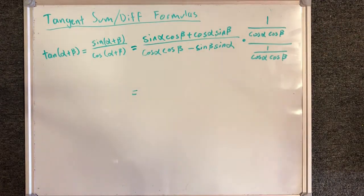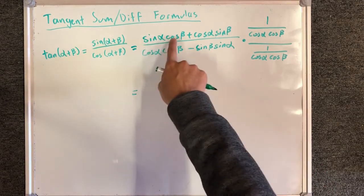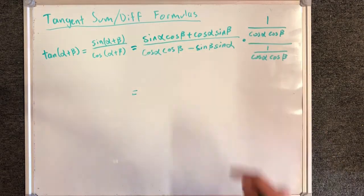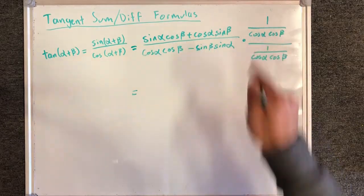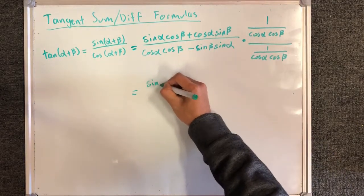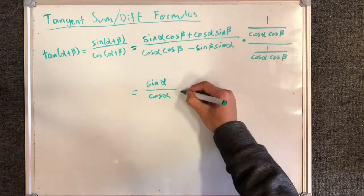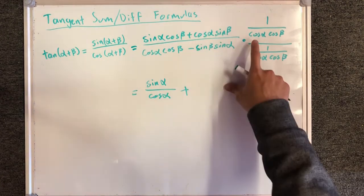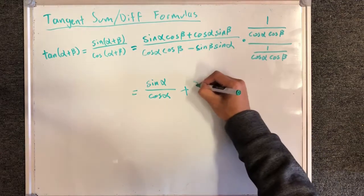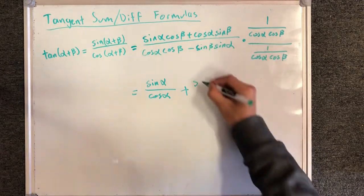After I do this, what I end up with is sine alpha cosine beta over cosine alpha cosine beta. The cosine beta cancels out and I have sine alpha over cosine alpha for my first term, plus cosine alpha sine beta over cosine alpha cosine beta. So these two are going to end up canceling out.